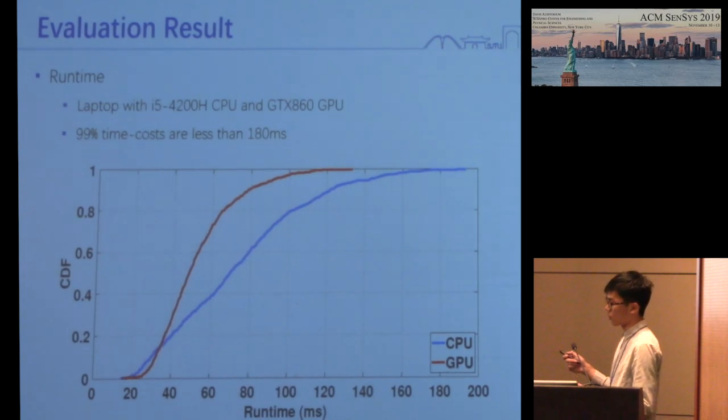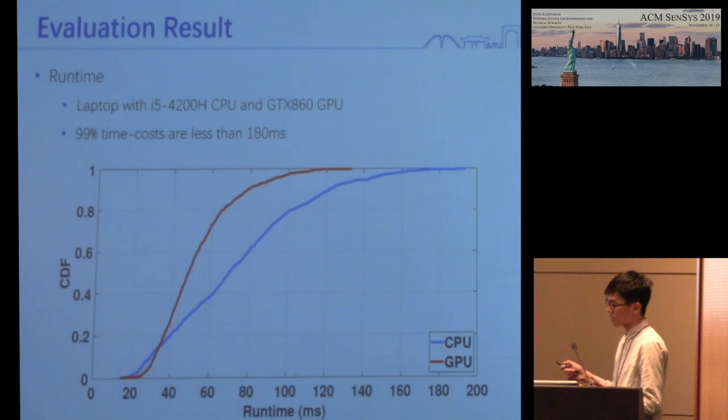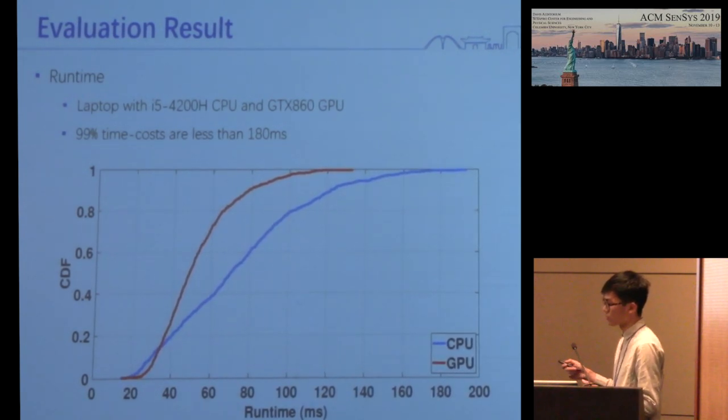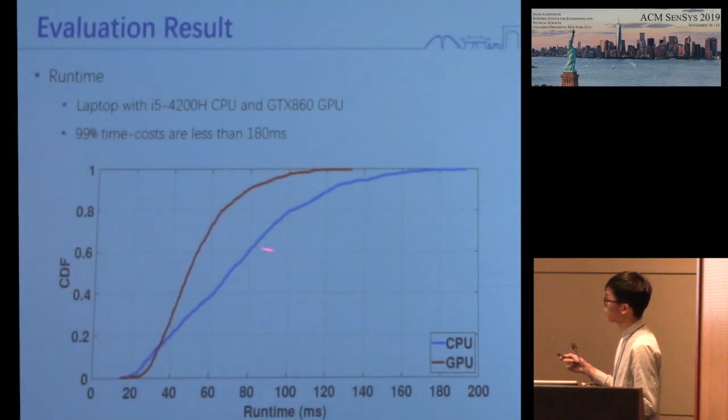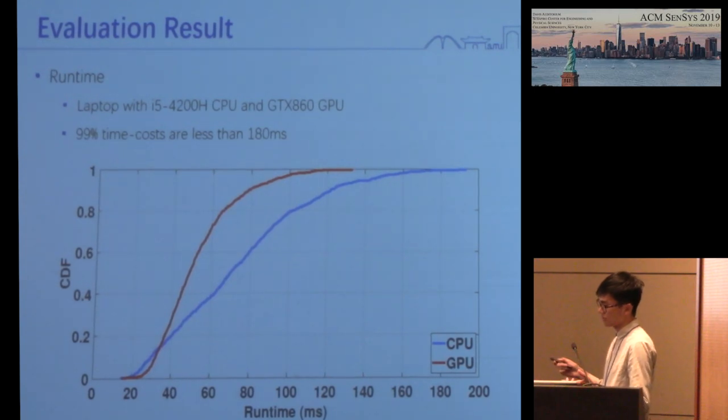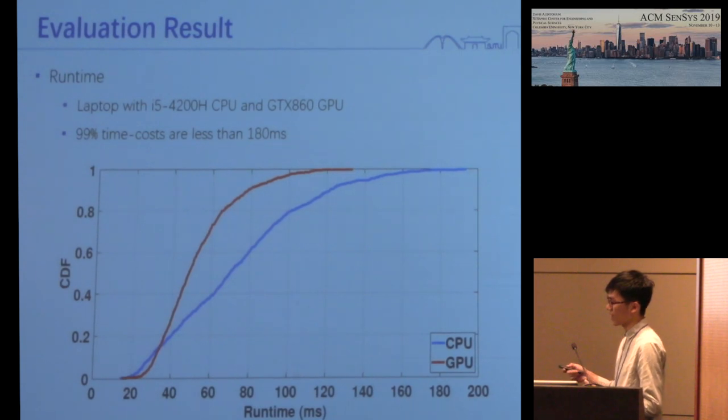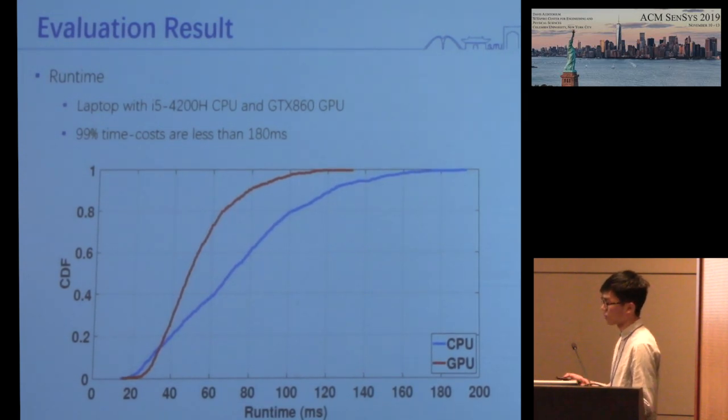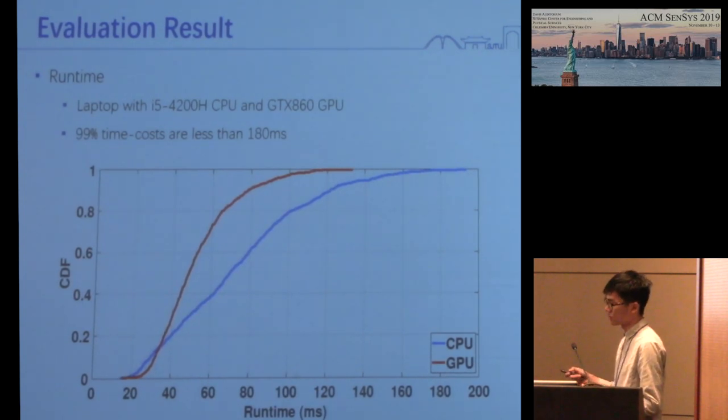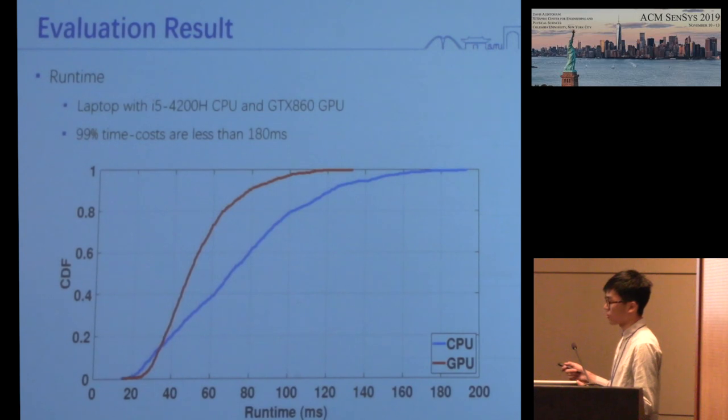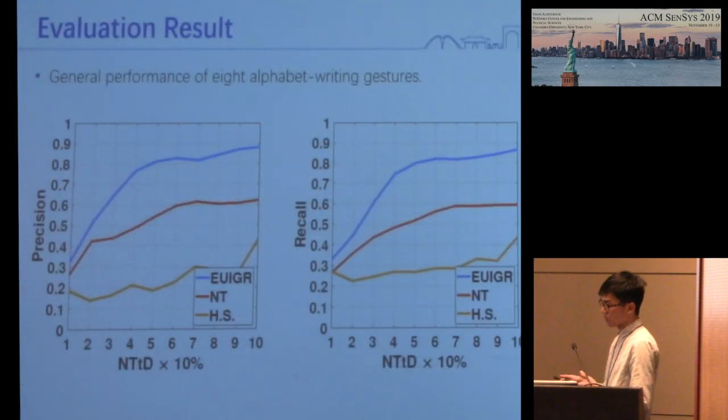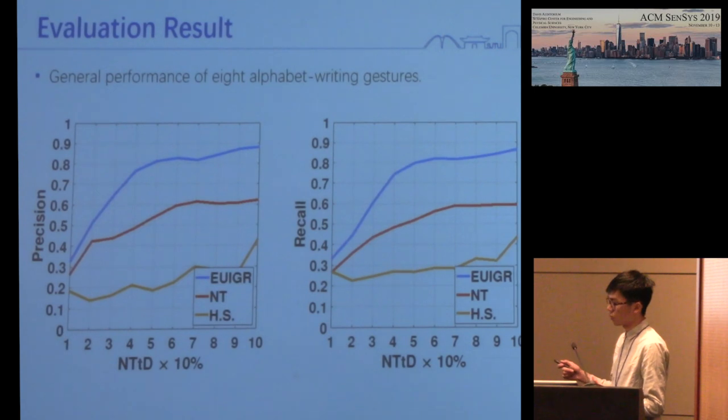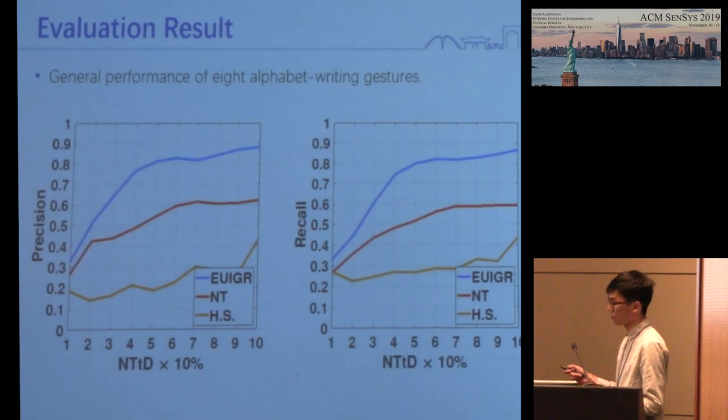For evaluating the runtime performance, we measure the CPU and GPU latency respectively. The CPU cost is shown in the figure. Even with CPU, almost all time costs are less than 180 milliseconds. Taking the length of the time interval between predictions of about 200 milliseconds into consideration, we can output a prediction before the next time interval. For demonstrating the effectiveness and generality of EUIGR, we also collected eight gestures of writing letters of the alphabet A, B, C, D, and so on to L, and evaluated the proposed method on these gestures.